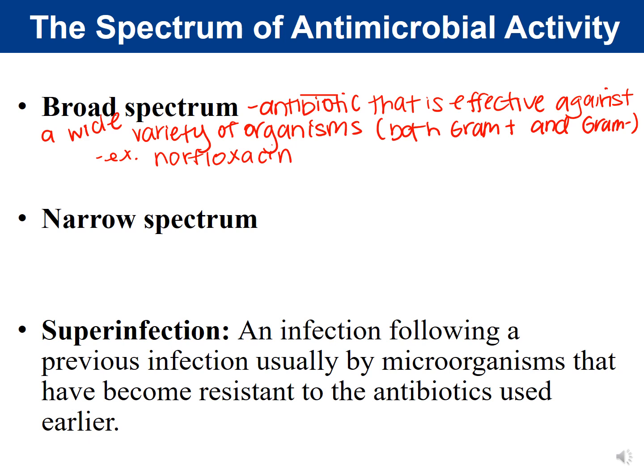The yeast infection occurs because when you take a broad spectrum, you kill off the good bacteria in the vagina — the normal flora — but the yeast is not inhibited by the antibiotic. With the bacteria gone, the yeast now has resources, space, and access to food, and starts to overgrow. Those are some drawbacks of a broad spectrum. Another drawback is what's called a superinfection.